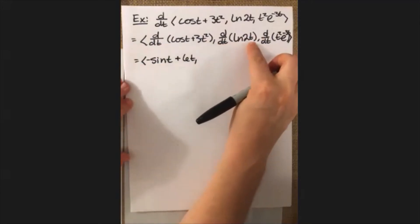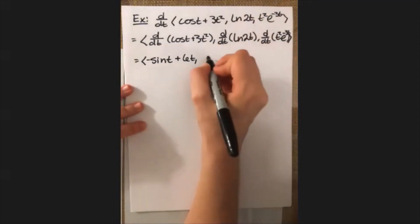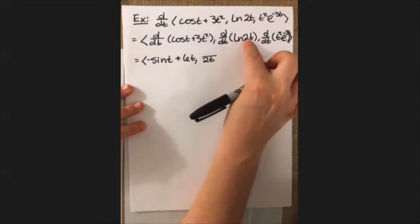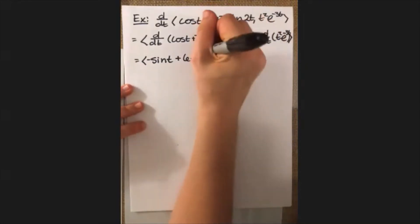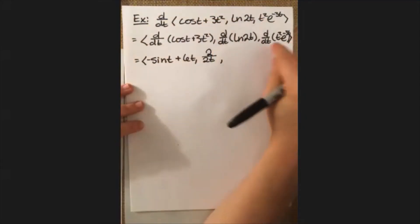This guy right here, we're going to have to apply the chain rule with. So natural log of 2t, you take the derivative of that and normally you get just 2t on the bottom, but we also have to take the derivative of the inside because of the chain rule and that's just 2. So I'll have a 2 on top there. And then this guy right here, I have to apply the product rule with because I have t squared e to the negative 3 times t.